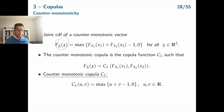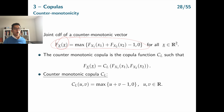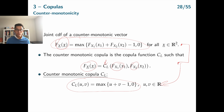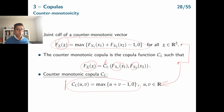For a counter-monotonic random vector, we can derive an expression for the joint CDF and then use Sklar's theorem to express it using the counter-monotonic copula C_L, which connects the marginals F_x1 and F_x2. Combining these results gives the counter-monotonic copula C_L(u1, u2) = max(u1 + u2 − 1, 0).